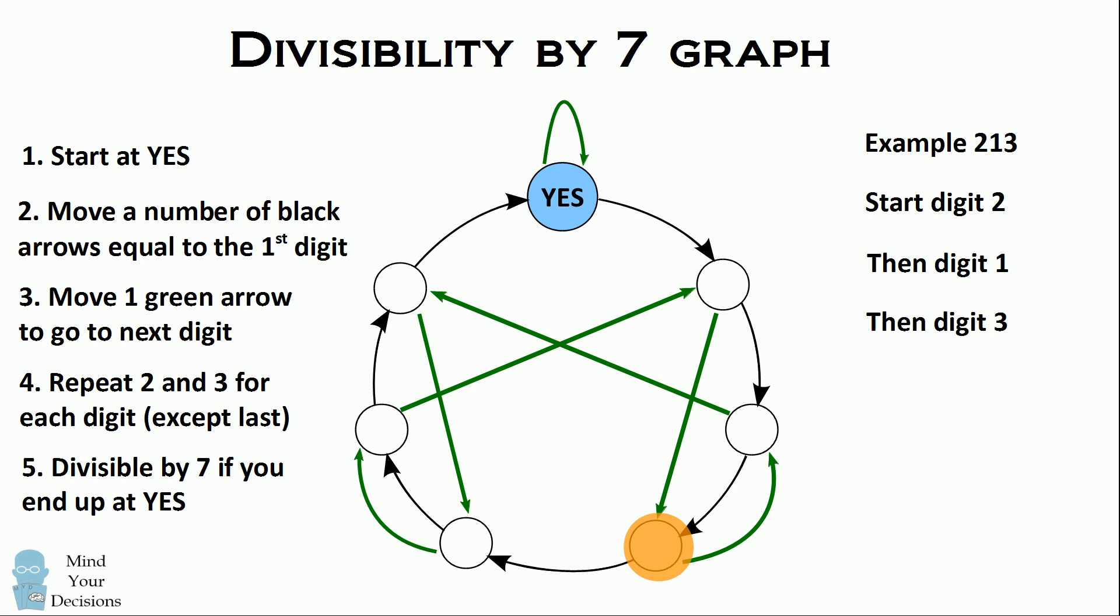So we found out that no, 213 is not divisible by seven. But actually, this graph can not only tell you whether a number is divisible by seven, it can actually tell you the remainder. If we label the circles one, two, three, four, five, and six, we've found out that 213 has a remainder of three when dividing by seven.